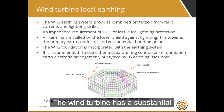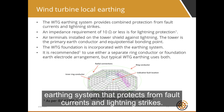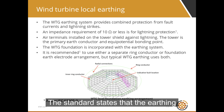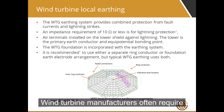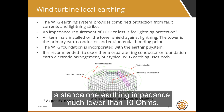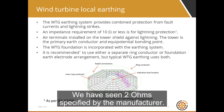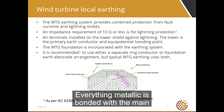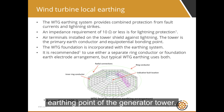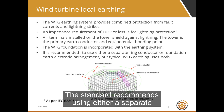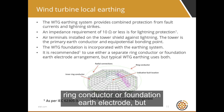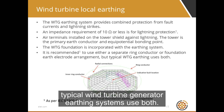The wind turbine has a substantial earthing system that protects from fault currents and lightning strikes. The standard states that the earthing impedance should be less than 10 ohms, measured at low frequencies. Wind turbine manufacturers often require a standalone earthing impedance much lower than 10 ohms — we have seen 2 ohms specified by the manufacturer. Everything metallic is bonded with the main earthing point of the generator tower. The wind turbine foundation is incorporated with the earthing system. The standard recommends using either a separate wind conductor or foundation earth electrode, but typical wind turbine generator earthing systems use both.